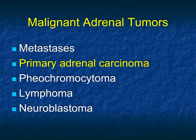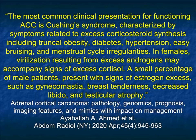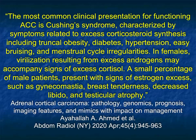Now we move to malignancy. Typically we're thinking about big masses — mets is a possibility, pheochromocytoma, neuroblastoma — but when we think of large masses we think about primary adrenal cortical carcinoma. ACCs, when they're hormonally active, Cushing's is the most common and those may be smaller tumors. When you have a large ACC it typically means it's not hyperfunctioning, because if it were hyperfunctioning it would have presented earlier. Signs can include hypertension, bruising, truncal obesity, and diabetes.